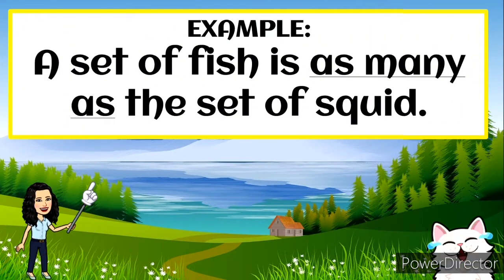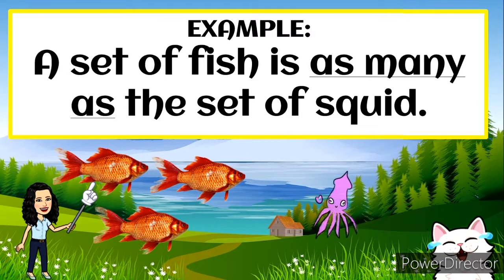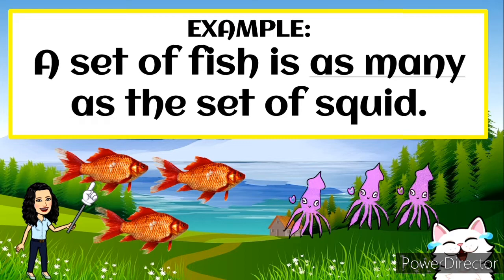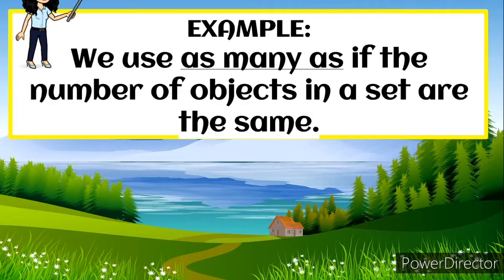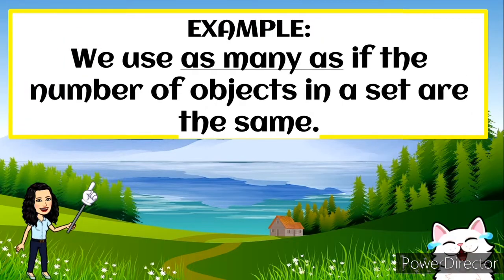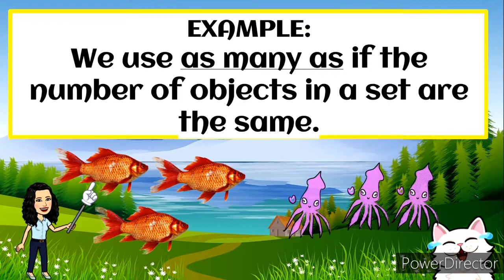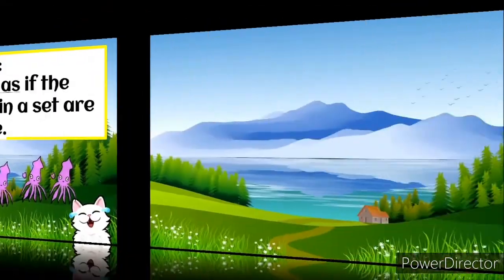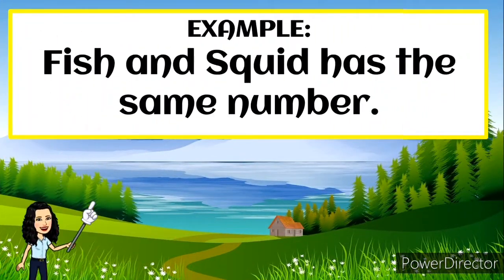Another example: a set of fish is as many as the set of squid. We use as many as if the number of objects in a set are the same. It's because set A has three fishes and set B has three squids. The fish and squid have the same number.